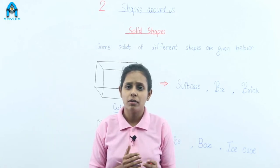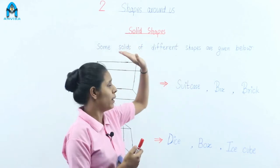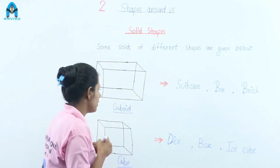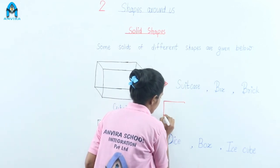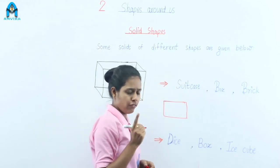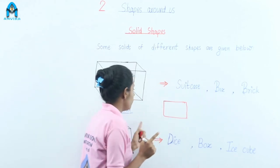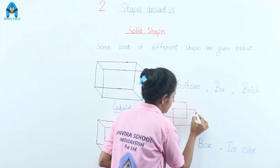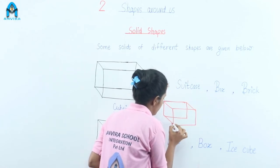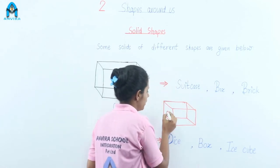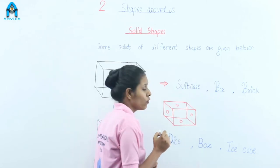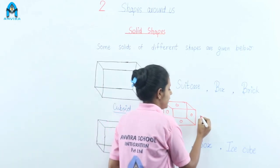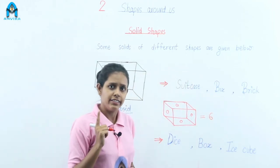Now we learn about solid shapes. Plane shapes are used to make solid shapes. For example, a rectangle can be extended to make a solid shape — it then has six sides and eight corners.